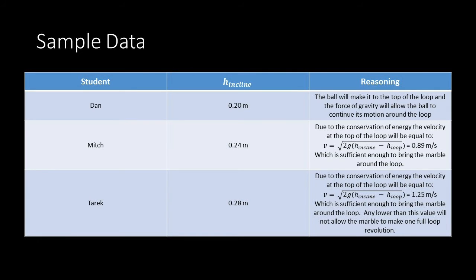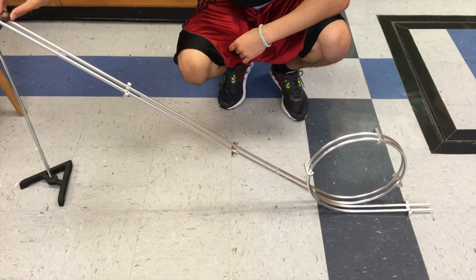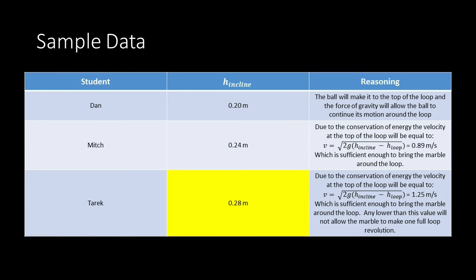Let's go to the lab to test these initial heights. Tark was correct in his answer. However, let's go through each part. Dan was incorrect because if a ball has zero velocity at the top of the loop, acceleration due to gravity points directly downward, so it would not continue around the loop — it would fall straight down. When we tested Mitch's height, the ball jumped a little on its way down. When we tested Tark's height, it made it fully around with no jumps.